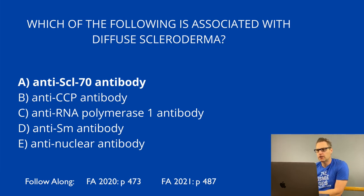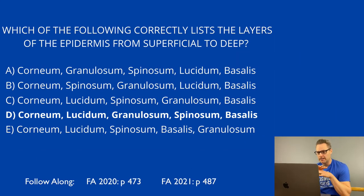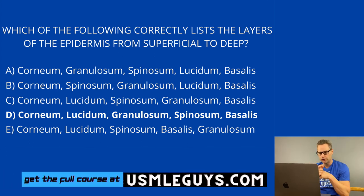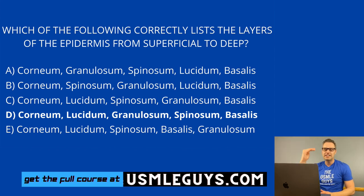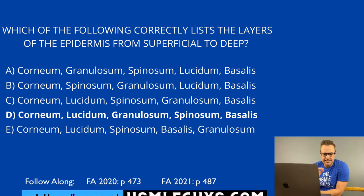Let's do one more question before we end this lecture. The correct answer here is D. The skin has three layers: epidermis, dermis, and subcutaneous fat. The layers of the epidermis from superficial to deep are: stratum corneum, stratum lucidum, stratum granulosum, stratum spinosum, and stratum basalis. Make sure you refer to a picture so you can recognize these layers visually, as this commonly pops up. Skin is a very important organ and this is a high-yield anatomy and histology question.